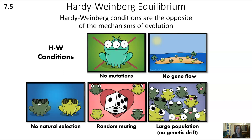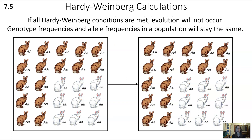They have a great Hardy-Weinberg Equilibrium video that I recommend you check out. The Hardy-Weinberg calculations are based on the assumption that all of those conditions are met, which means that evolution will not occur. In that case, genotype frequencies and allele frequencies in a population will stay the same.